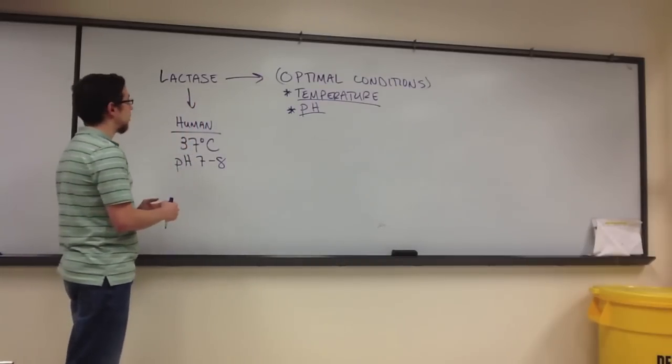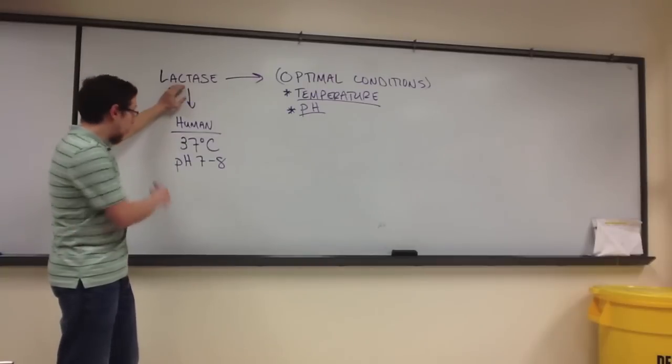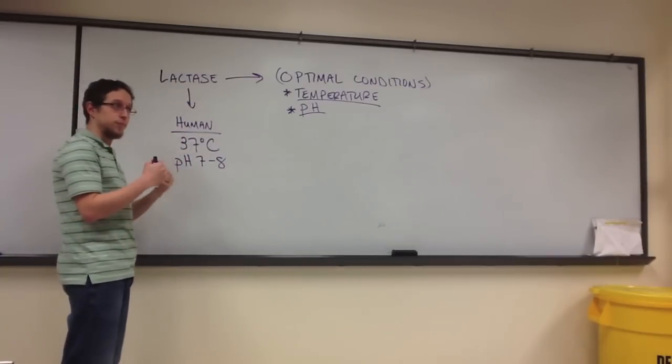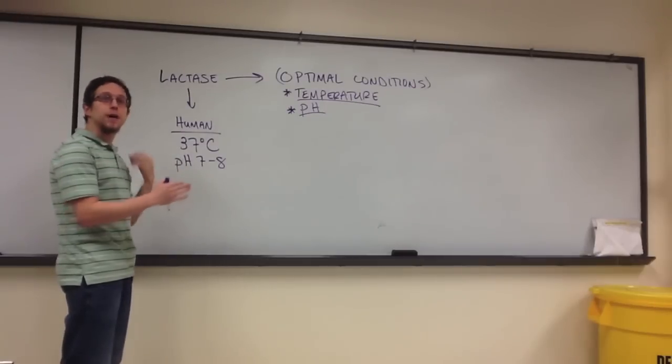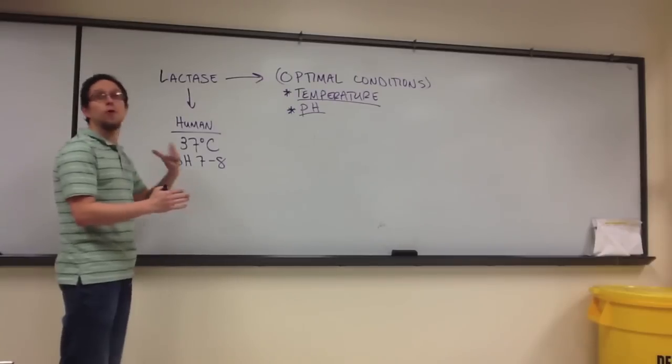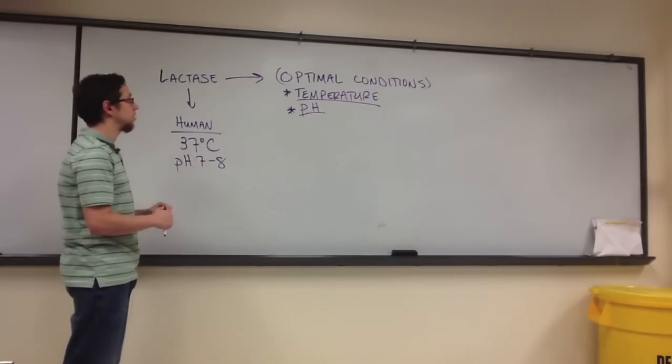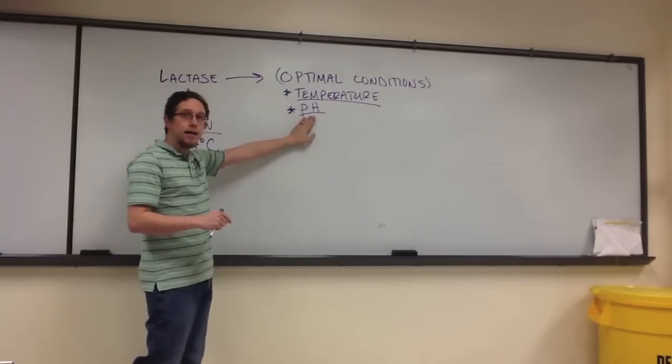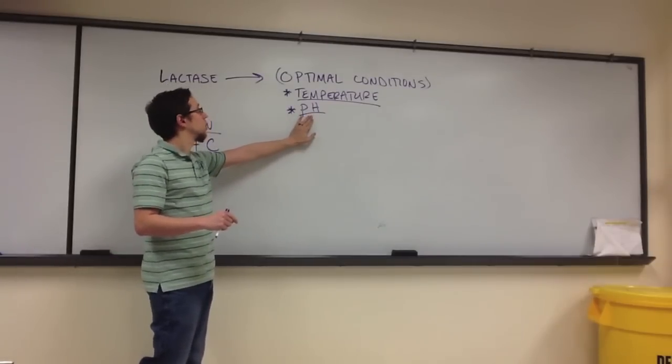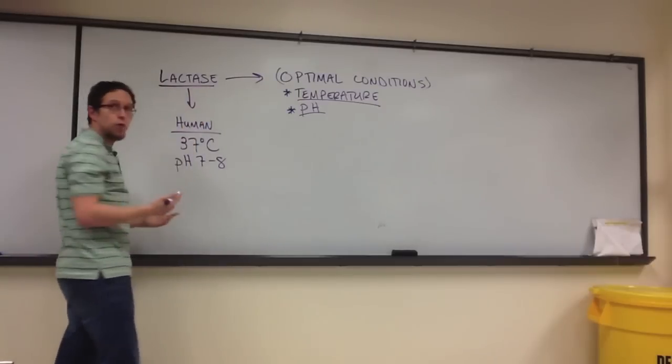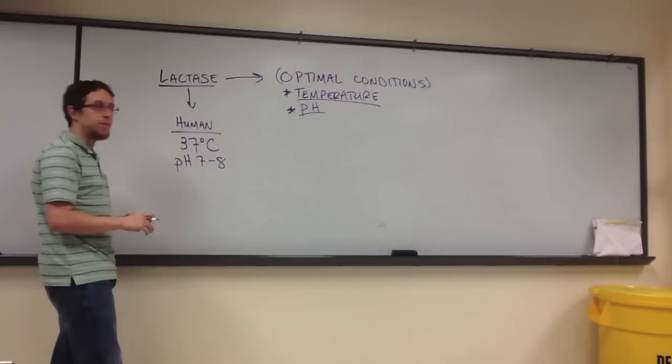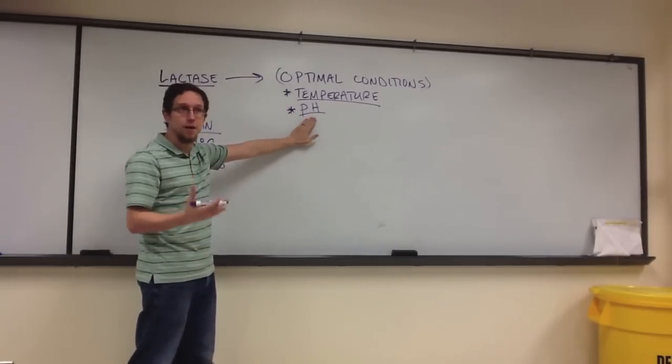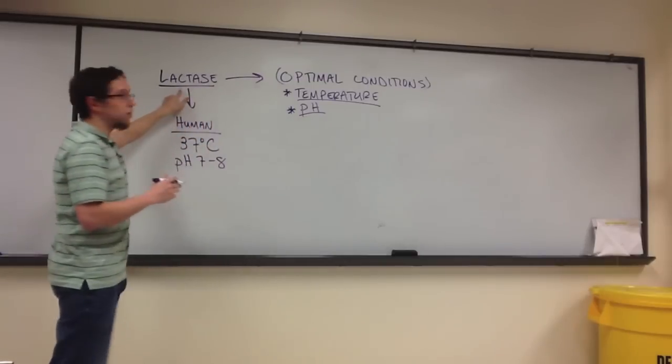I'm going to let you know right now that if this lactase is derived from bacteria or humans, when we eat it, which this lactase came from edible capsules, it has to first pass through our stomach before it can be utilized in the small intestine. And the stomach has an acidic pH.